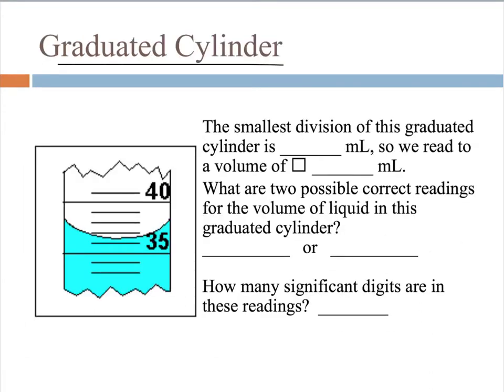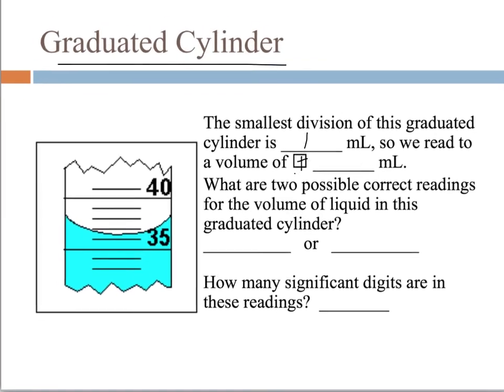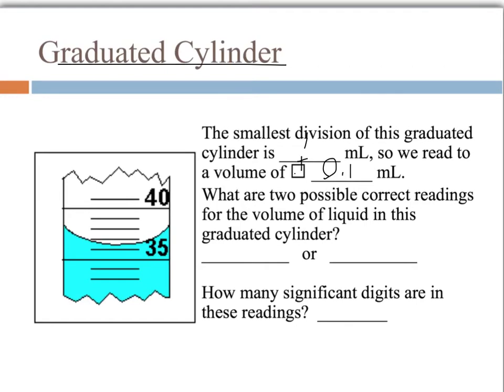Here's another example. Here's a graduated cylinder. The smallest division is worth one milliliter. So we would read to a volume of plus or minus 0.1 milliliters. And the 0.1, that tenths place, is going to be our estimated digit. So two possible correct readings. Well, we know that it's above 35. Here's 30. I'm sorry. We know it's above 36. Here's 36 right here. But it's not quite 37. So we'll say 36 and 36. And then our estimated digit, well, one good estimate would probably be 0.5. And another good estimate would be 0.4. So 36.5 milliliters or 36.4 milliliters, both acceptable readings for this graduated cylinder. How many significant digits? Well, each has three, as you can see, 365 and 364.